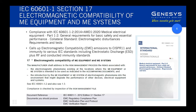IEC 60601-1 Section 17 calls up collateral standard 60601-1-2. The specific clause in Section 17 explains why we are doing this — 60601-1 is a recipe book that calls up all the ingredients in the form of other standards addressing specific aspects. The core standard called up is CISPR 11, one of the CISPR standards for electromagnetic compatibility covering radiated radio waves. There is also a standard specifically for electrostatic discharge and a suite of standards for immunity.